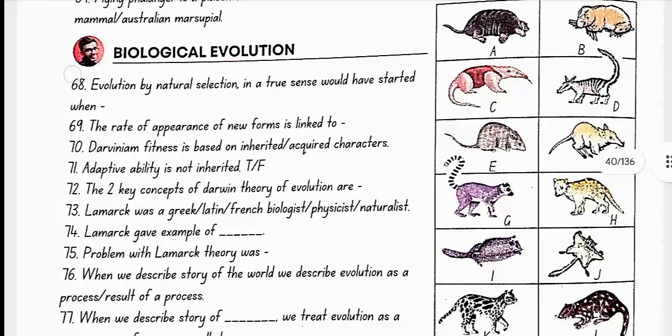Biological evolution. Evolution by natural selection in a true sense would have started when cellular forms of life with differences in metabolic capability originated on earth. The rate of appearance of new forms is linked to life cycle or life span. Darwinian fitness is based on inherited characters, not acquired characters. Adaptive ability is inherited.